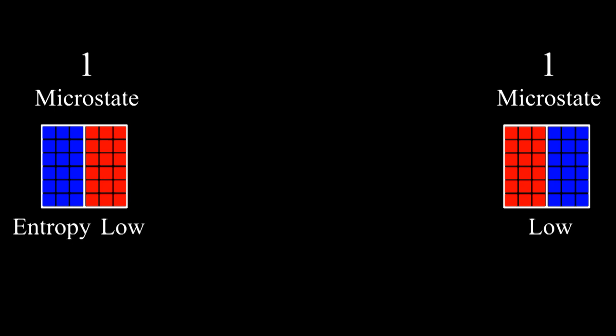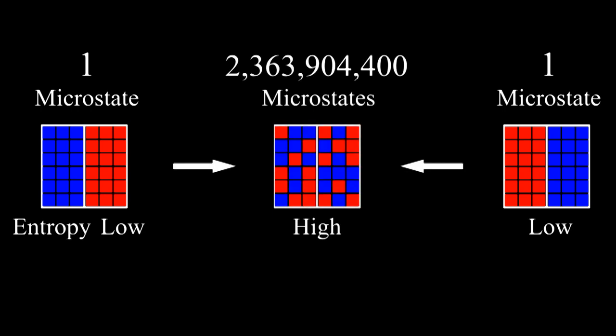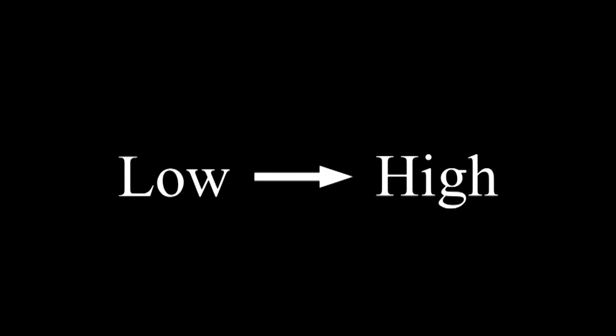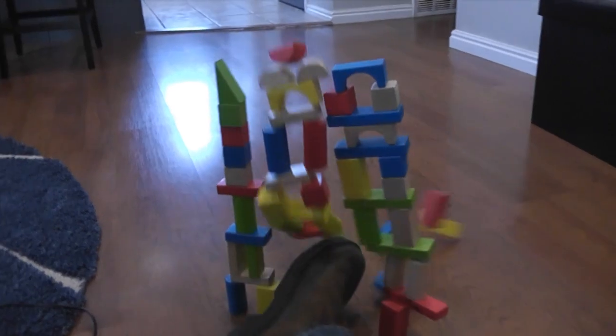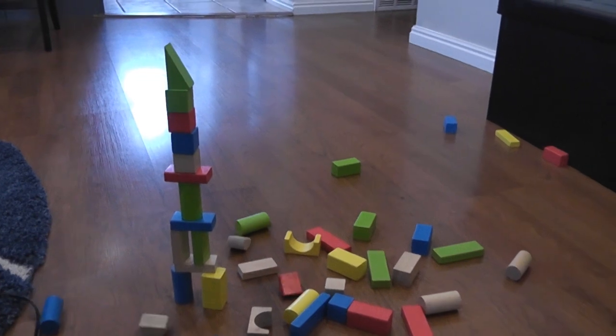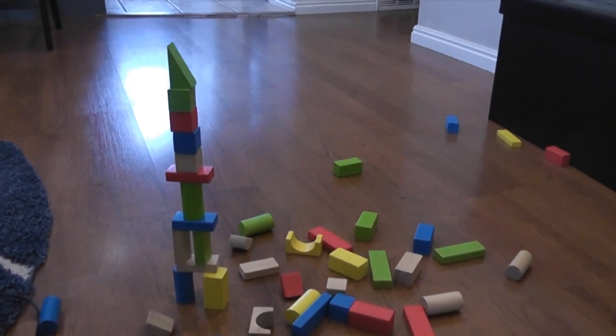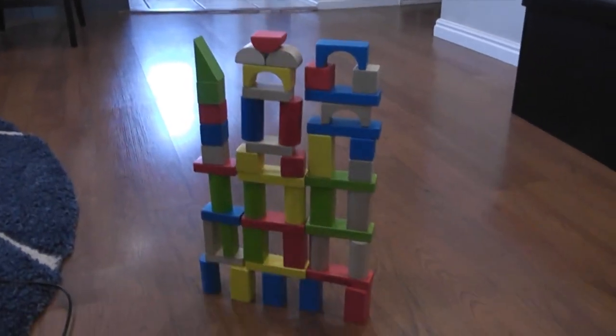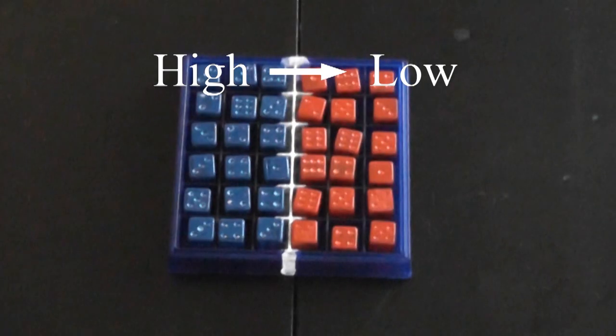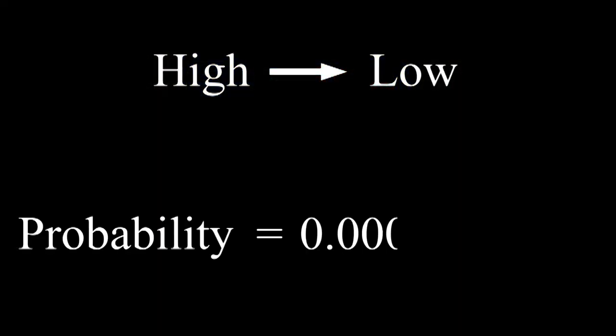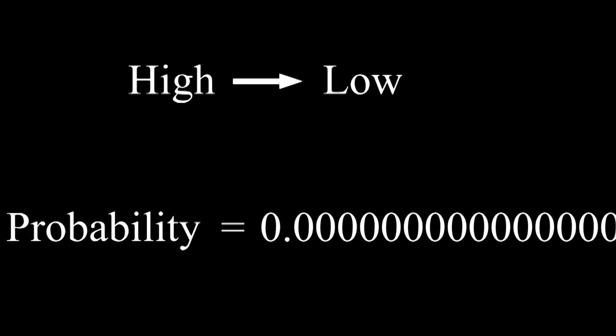If you start a system in low entropy, it naturally goes to high entropy because there are so many more states that have high entropy. Only a few states are organized. Most of them are very random. Systems naturally go from low entropy to high entropy. It's a law of nature, but it's a strange law of nature because it's statistical. It is possible to go from high to low entropy, but this is very, very, extremely unlikely.